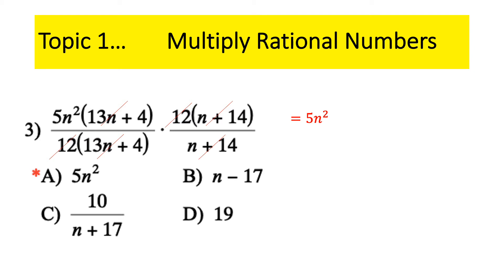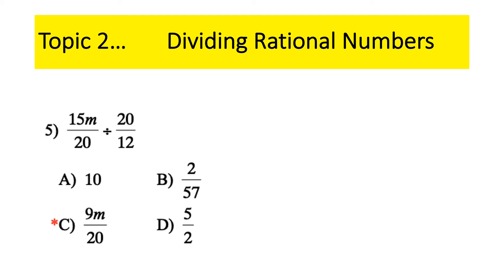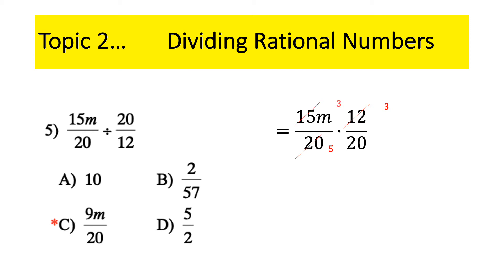Topic two: dividing rational numbers. Remember, when dividing, you do copy-dot-flip first — don't do any cross-reduction before the flip. After the flip, lots of cross-reduction: 4 goes into 12 three times and into 20 five times; 5 goes into 15 three times and into 20 four times. Multiply everything across — the M never canceled — so we're left with 9M over 20, which is answer C.